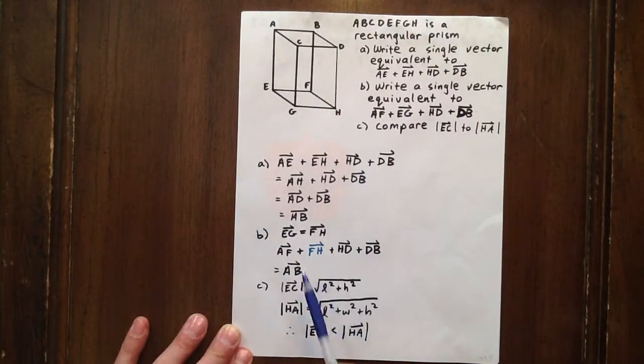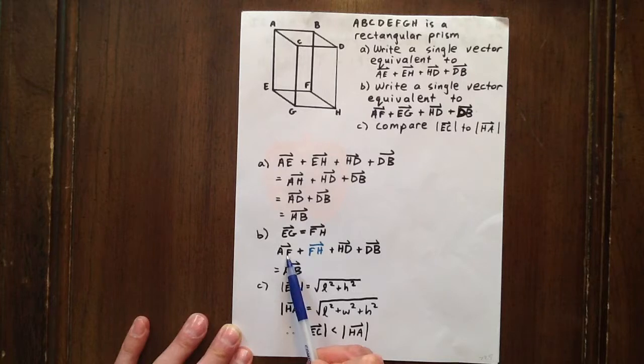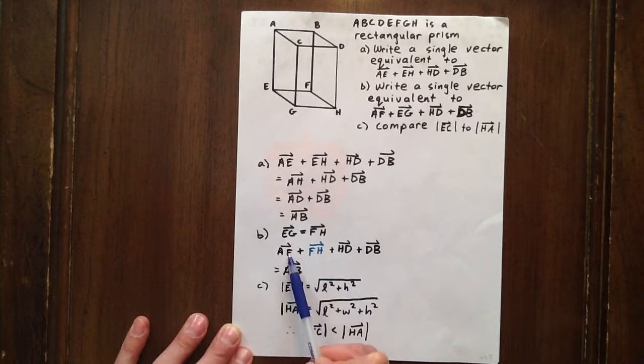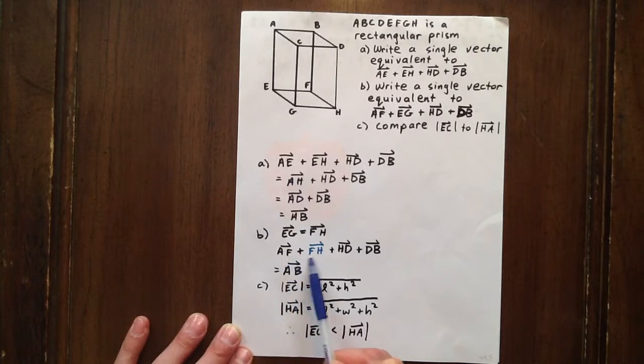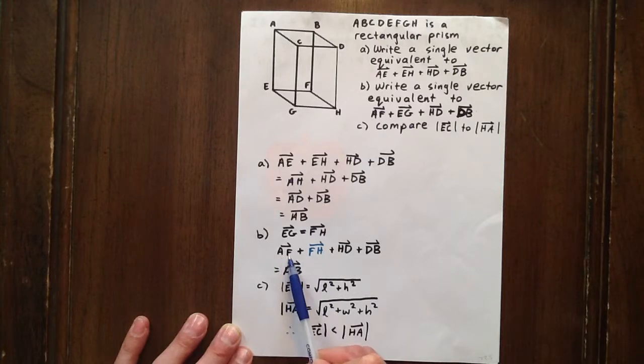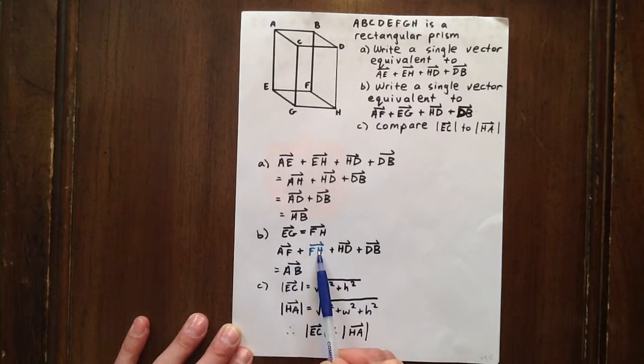Now why would we look to do that? Because if you're adding the vector AF plus the vector FH, to go from A to F and then from F to H is like going from A to H. So A to F plus F to H is A to H.